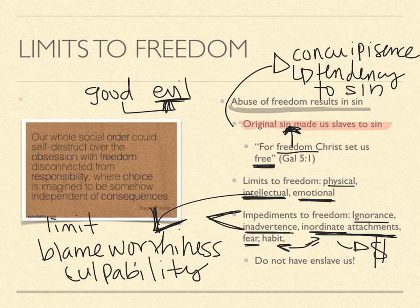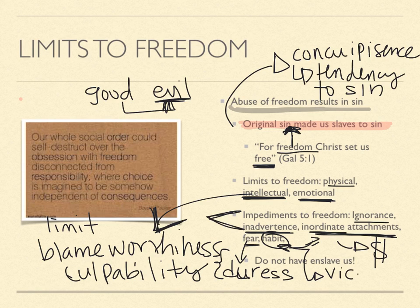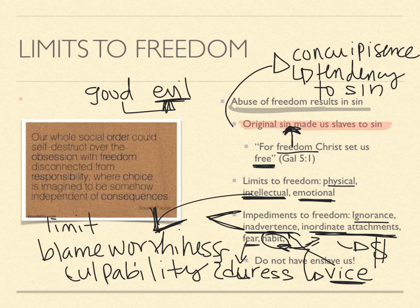Fear or duress is another impediment. If somebody puts a gun to your head and tells you to rob the liquor store for them, obviously you're not going to be held fully responsible because you're afraid for your life and under duress — someone is pressuring you. Finally, there's habit. Vices are bad habits. Once you acquire a bad habit, you tend to do things inadvertently. For someone who has the vice of alcoholism — which is also a medical condition — they will reach for the bottle and drink without even knowing it; it becomes such a habit.